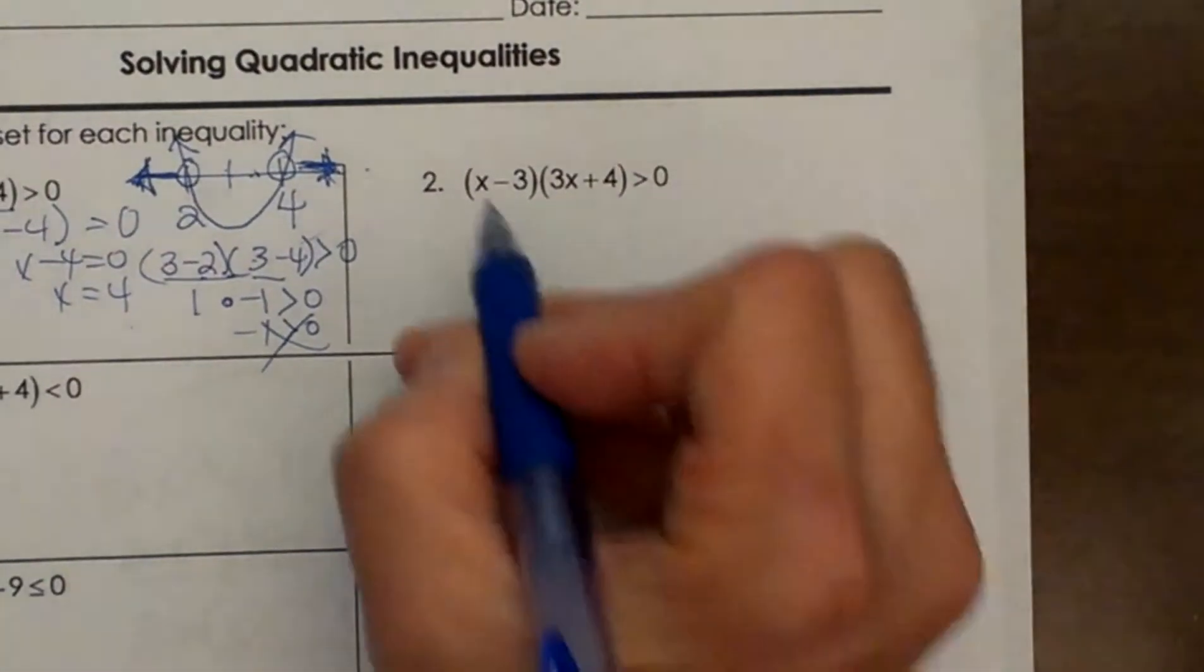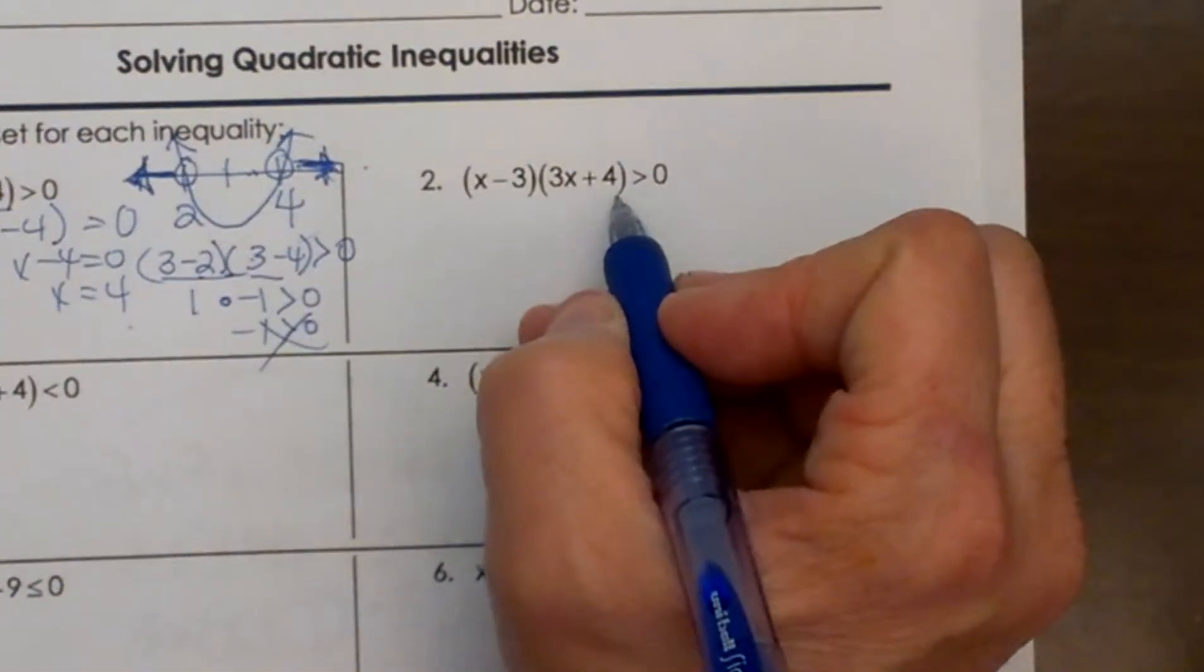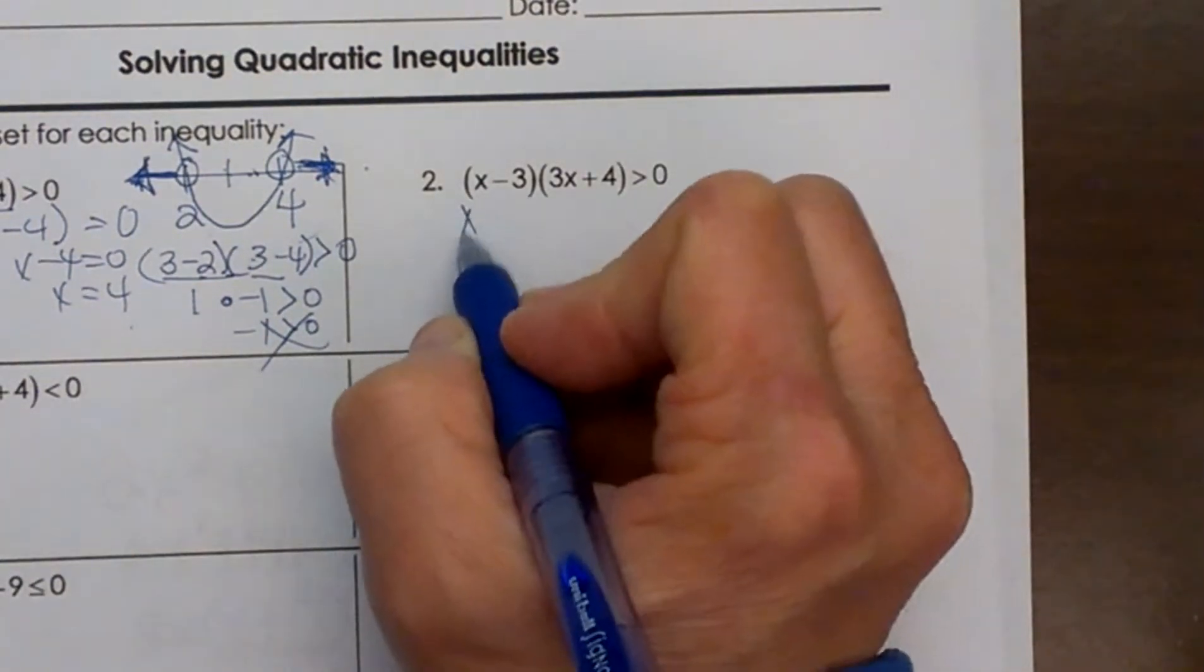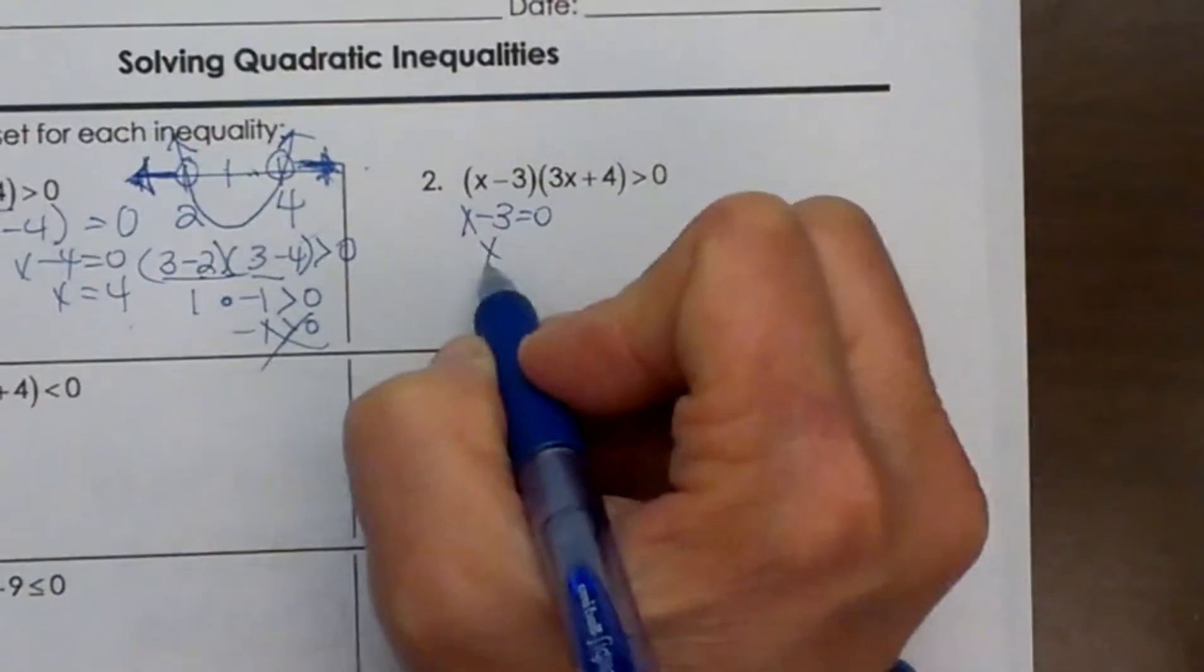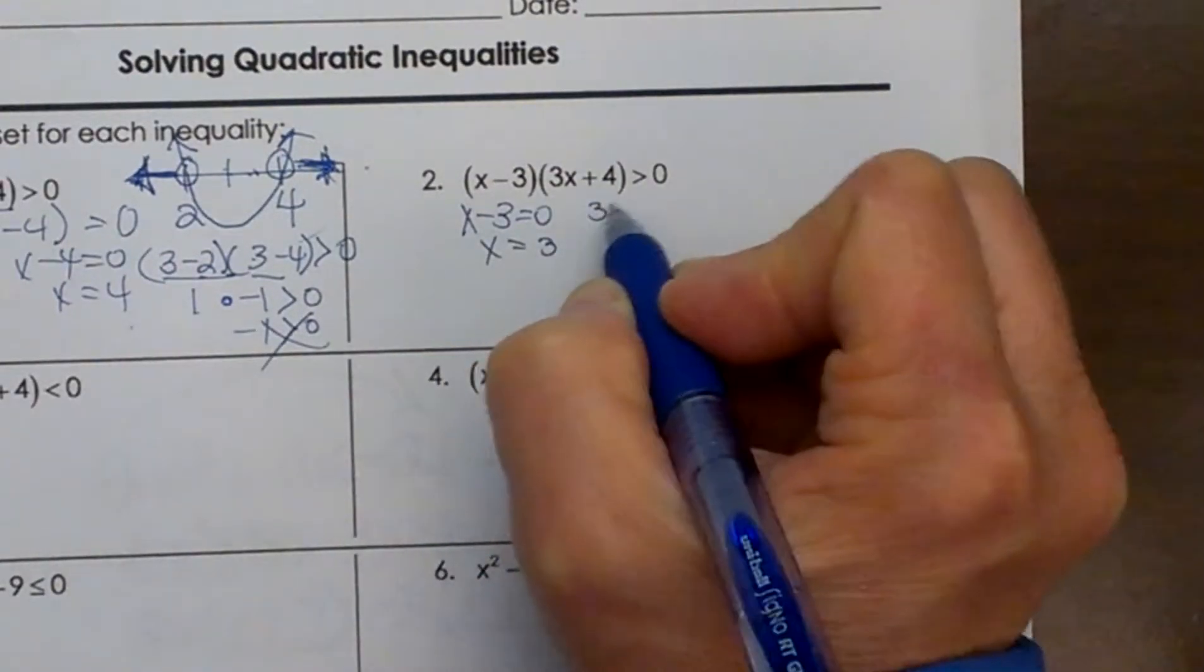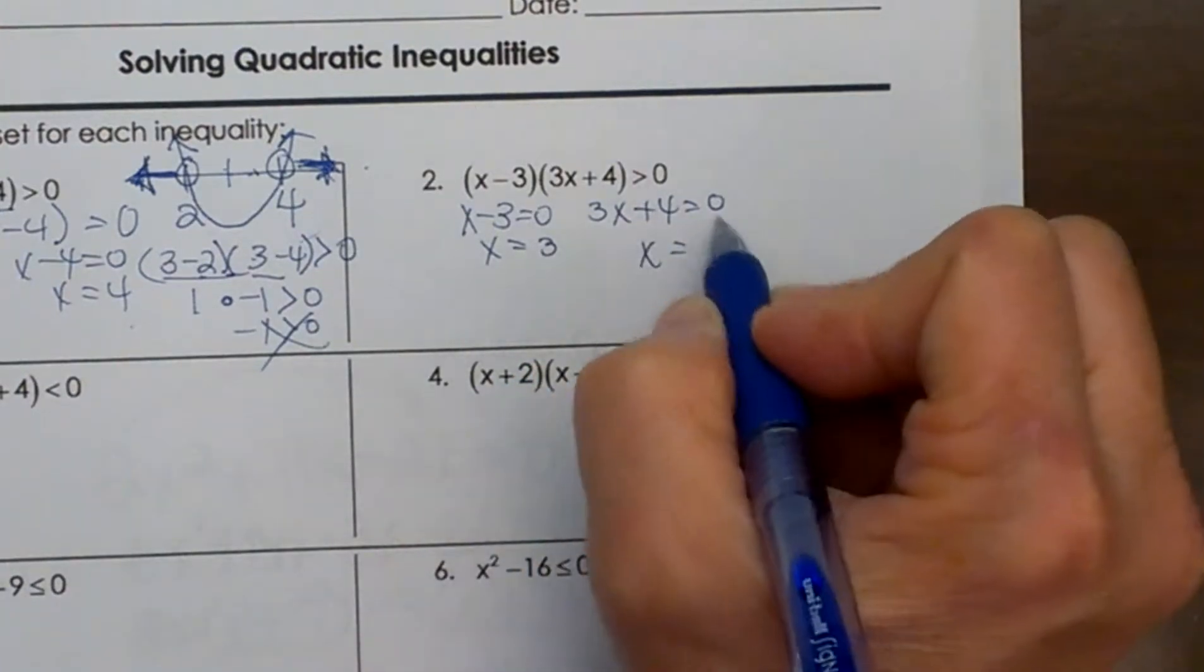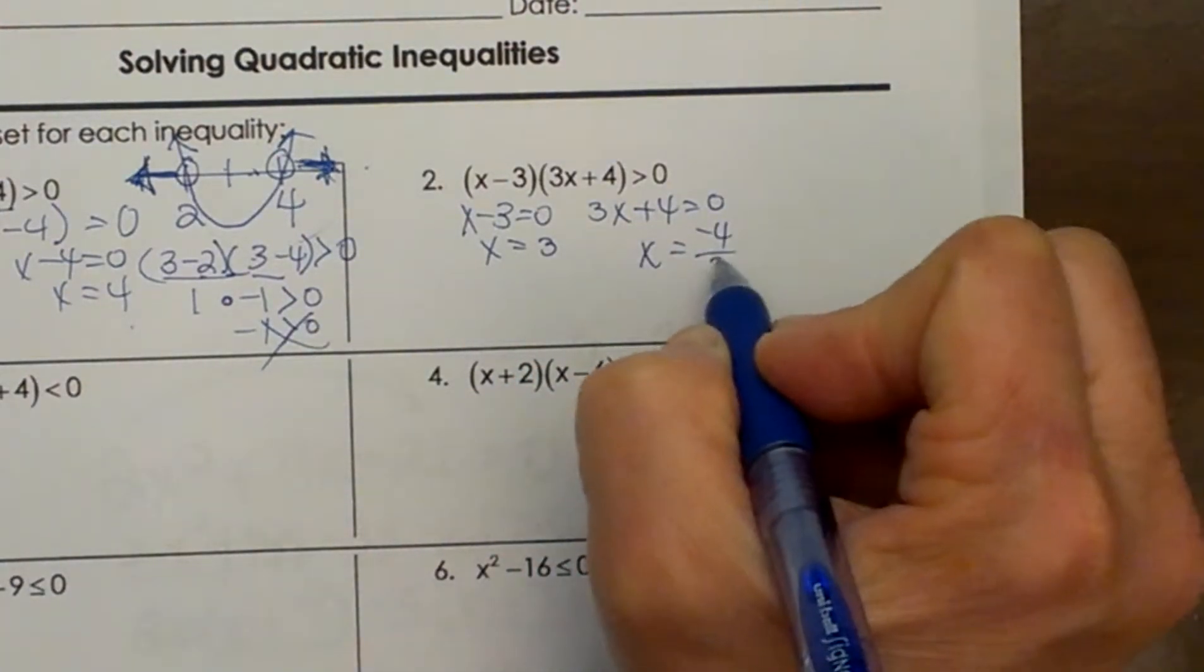So let's look at one more of these. This one we will go through a little bit quicker. But this one is already factored. So our solutions are x minus 3 is 0. So x is 3. And 3x plus 4 equals 0. So x is minus 4 divided by 3. Negative 4 thirds.